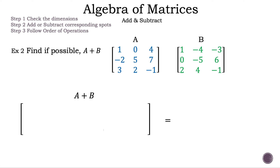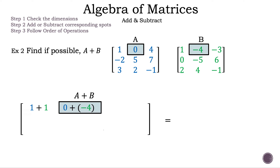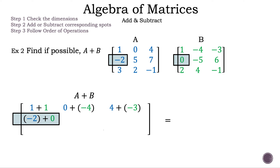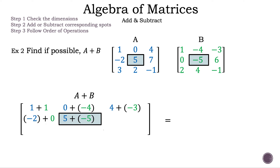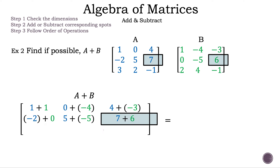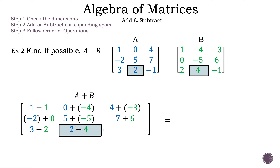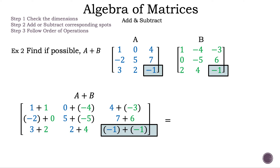Now let's show our work. Row 1, column 1: 1 plus 1. Row 1, column 2: 0 plus negative 4. Row 1, column 3: 4 plus negative 3. Row 2, column 1: negative 2 plus 0. Row 2, column 2: 5 plus negative 5. Row 2, column 3: 7 plus 6. Row 3, column 1: 3 plus 2. Row 3, column 2: 2 plus 4. Row 3, column 3: negative 1 plus negative 1. Now let's simplify to get our resultant matrix.